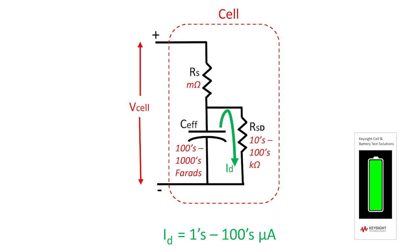Over weeks or months, this self-discharge path depletes the stored energy in C-effective, thus causing the cell voltage to drop by a readily measurable or observable amount.